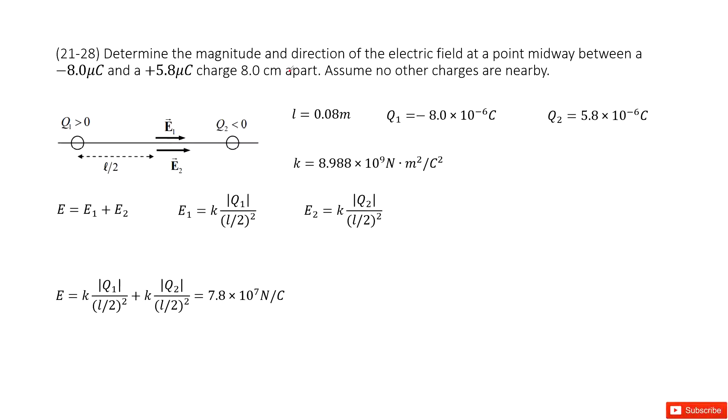We need to determine the magnitude and direction of the electric field at a point midway between two charges, q1 and q2. q1 is a positive charge, q2 is a negative charge. We need to find the electric field in the middle. The middle means the distance between q1 and the middle point is half of the distance between q1 and q2, so L over 2.